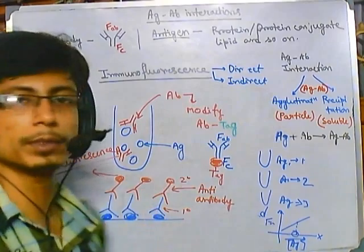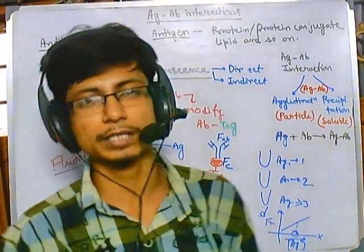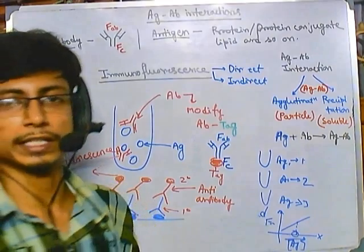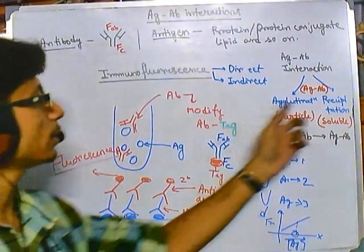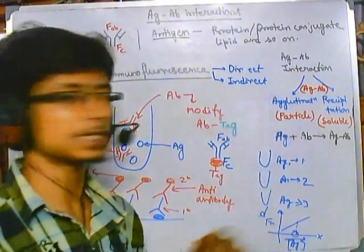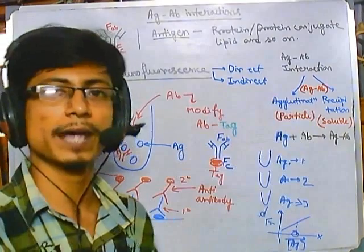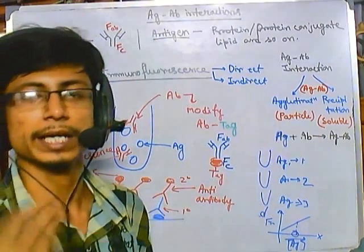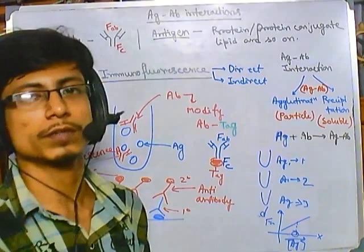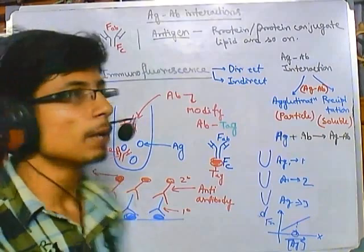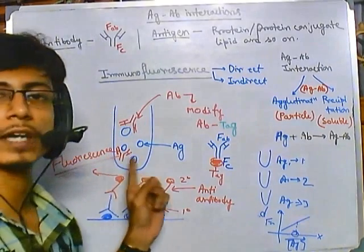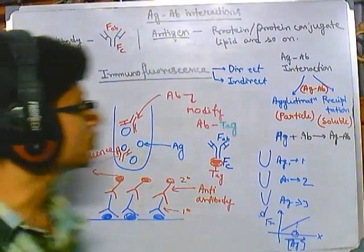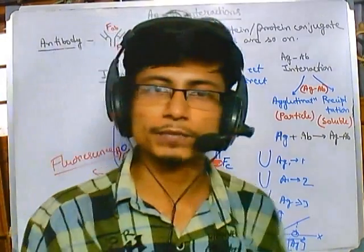By measuring this fluorescence, we can again use a standard curve to extrapolate and get the desired concentration of antigen. This is called the indirect type of immunofluorescence detection. Using immunofluorescence detection — both direct and indirect — it is quick and easy to get the actual unknown concentration of antigens. Unlike agglutination and precipitation assays, which are qualitative in nature and cannot tell us the concentration, immunofluorescence gives us a quantitative measurement of actual antigen concentration.